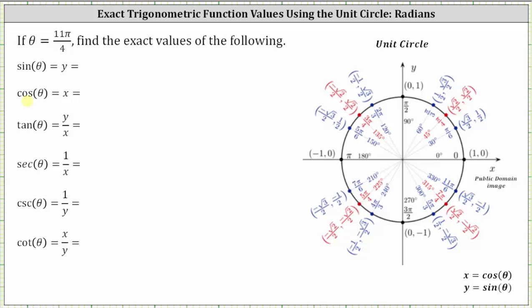When using the unit circle, sine theta is equal to y, cosine theta is equal to x, and tangent theta is equal to y divided by x. Secant theta is equal to the reciprocal of cosine theta, or one divided by x. Cosecant theta is equal to the reciprocal of sine theta, or one divided by y, and cotangent theta is equal to the reciprocal of tangent theta, which is x divided by y.